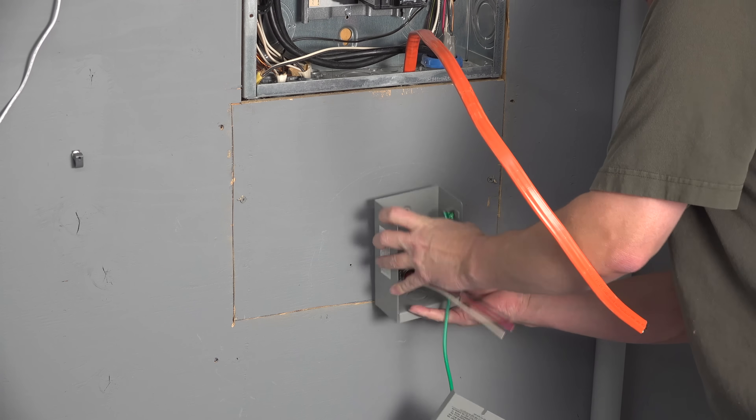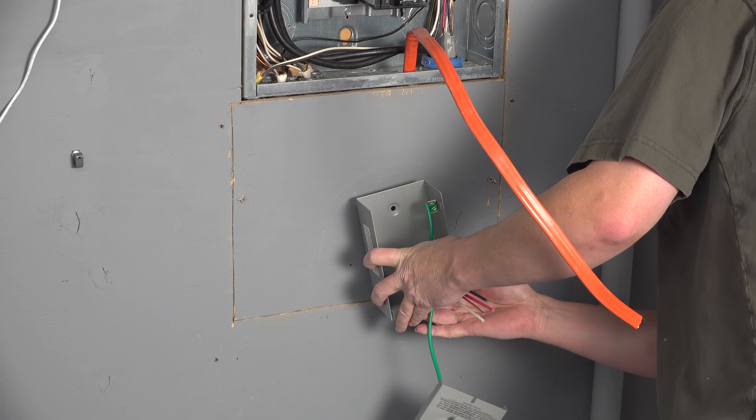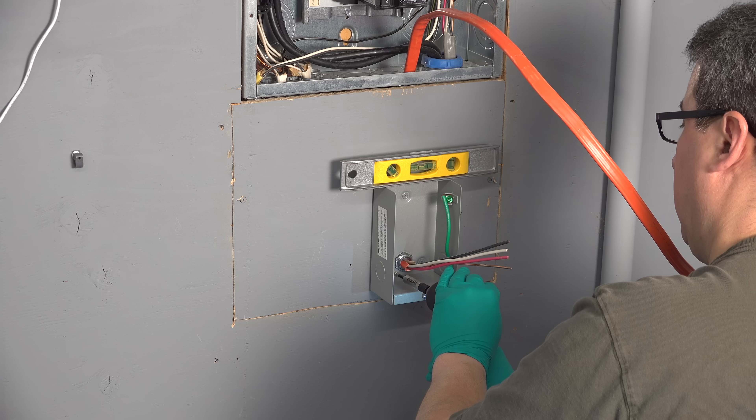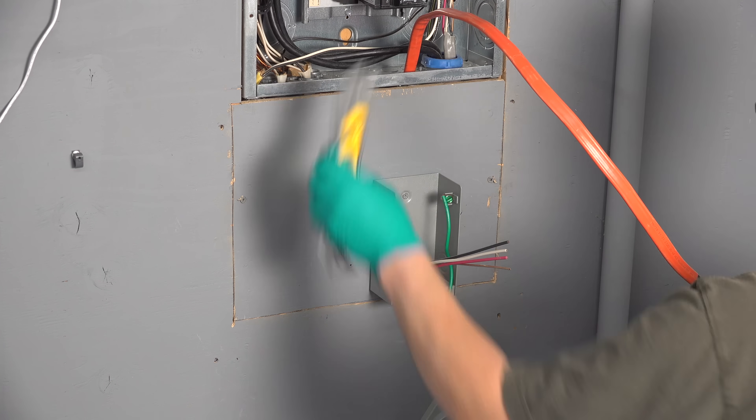Now just secure this access panel back to the wall and mount the inlet box. It's worth making sure that it's level as well. Super simple to install. You just use three wood screws to mount it to either your siding, your wallboard, or whatever you've got.